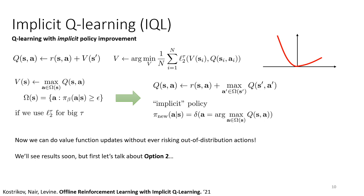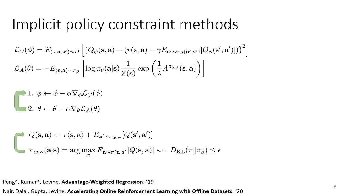Once the Q and V training is done, you do need to actually recover a policy. Notice that in the Q and V updates, the policy doesn't explicitly participate at all — that's why we call this implicit. This approach requires a separate step to extract the policy, typically done with something like the advantage-weighted method, using the equation from the actor loss but with the Q function trained via implicit Q-learning.